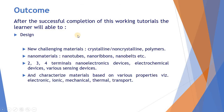Now, the outcome of this tutorial: after successful completion, the learner will be able to design new and challenging materials — which may be crystalline, non-crystalline, polymers, biomaterials, or nanomaterials like nanotubes, nanoribbons, nanobells, nanodiscs, etc. They will also be able to design two, three, and four terminal nanoelectronic devices, electrochemical devices, and various sensing devices, and characterize materials based on properties like electronic, ionic, magnetic, mechanical, thermal, and transport properties.